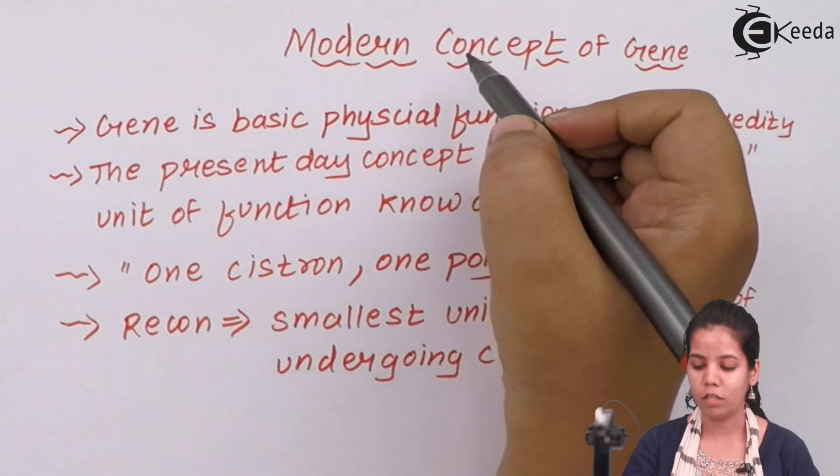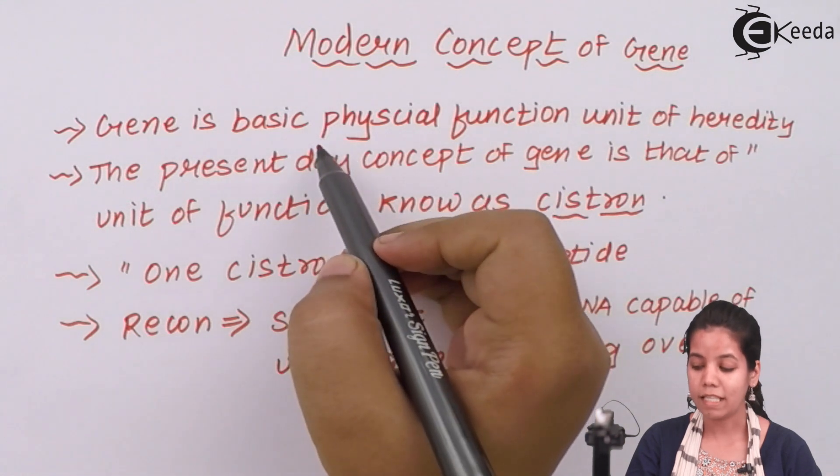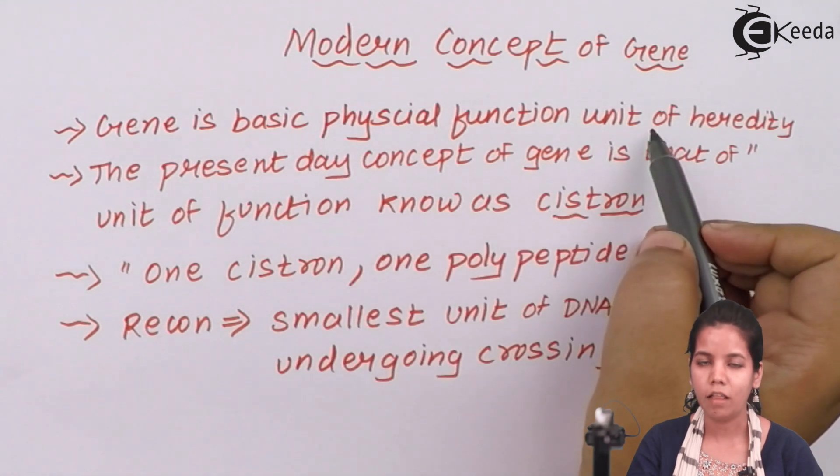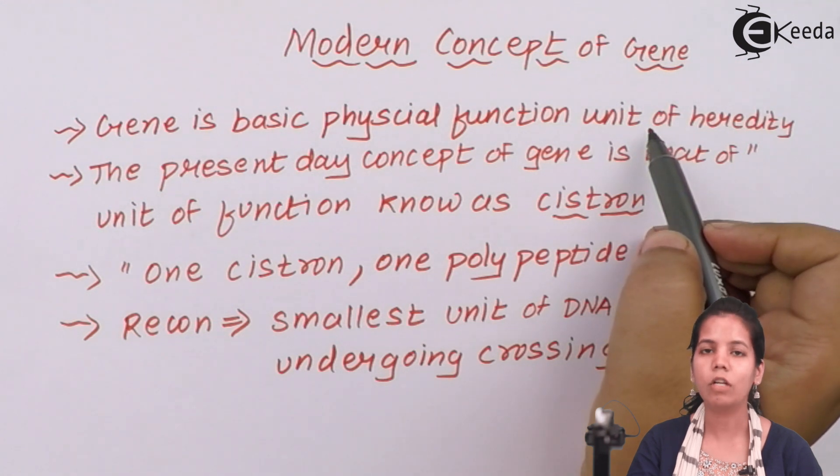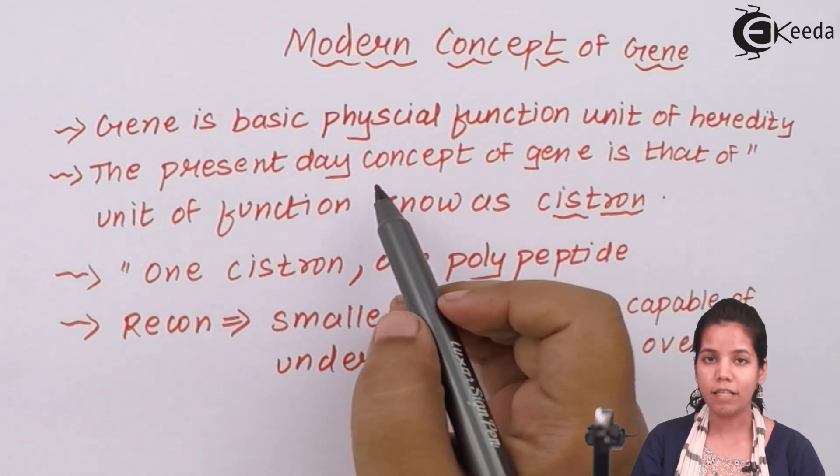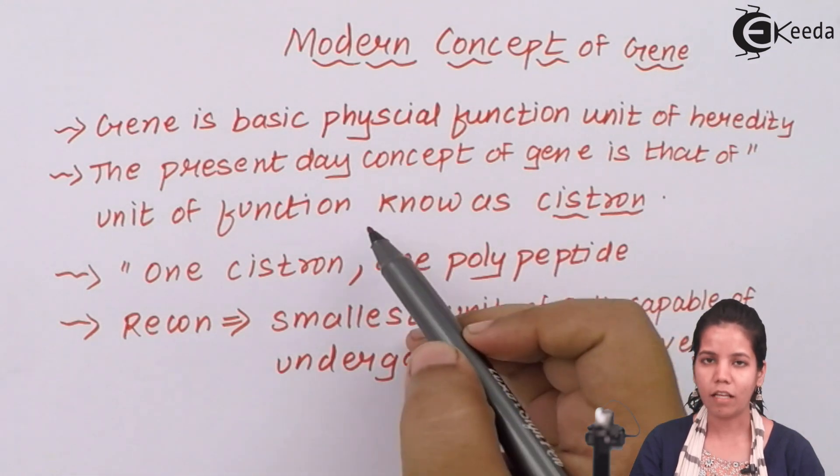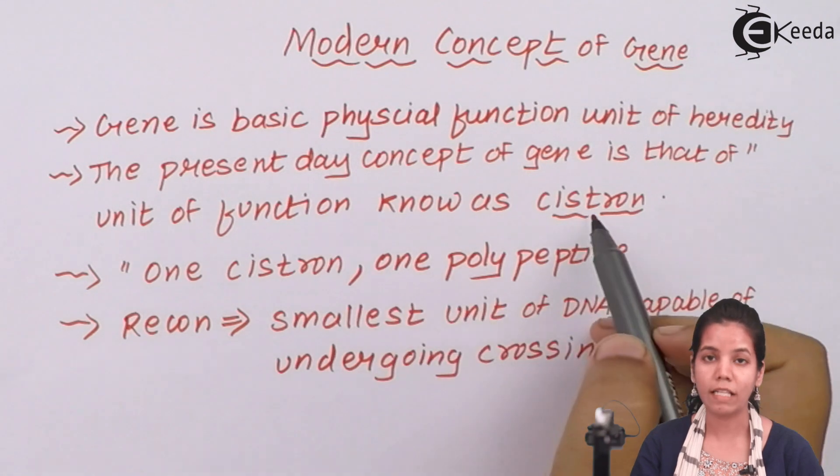Modern concept of gene. We all know that genes are basic unit of heredity. The way you look is decided by pairs of genes present on deoxyribose nucleic acid. Now the present concept or the present day concept of gene says that gene is nothing but unit of function which is known as cistrons.